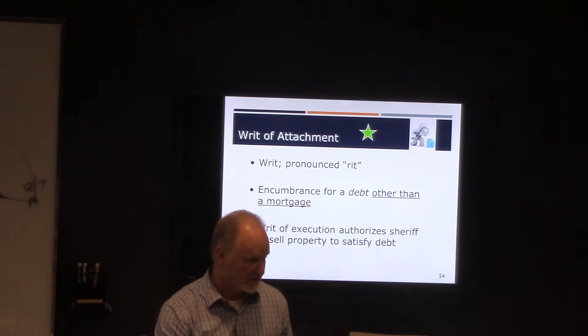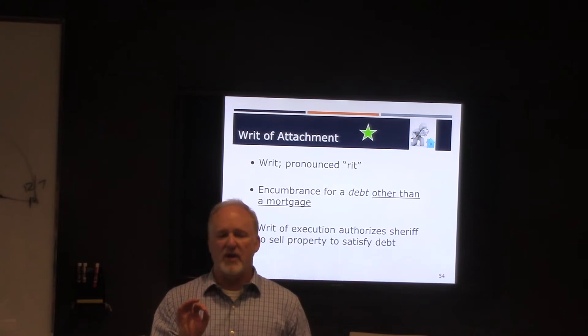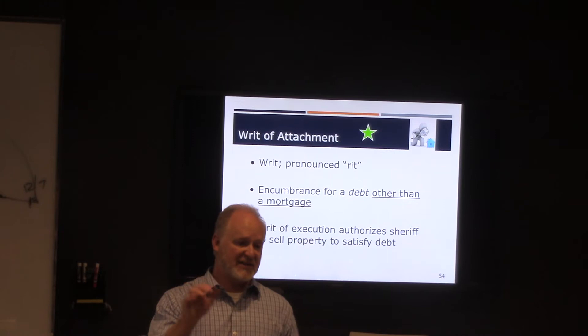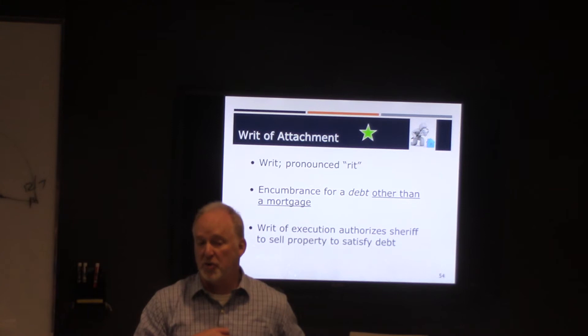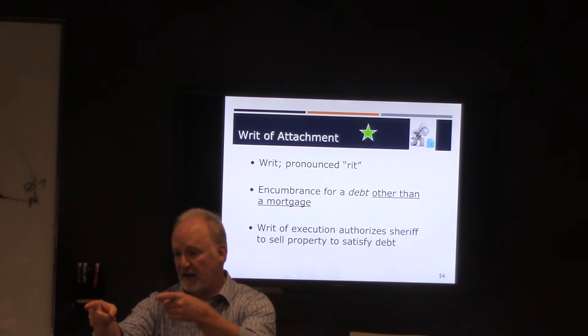Notice again, when did I file for a writ of attachment? Simultaneously with filing the suit. Okay. Have I won the suit yet? No. But what I'm doing is I'm putting the notice out that I plan to attach this property if, in fact, I win this lawsuit. Okay. If I ultimately win the lawsuit, then I can file what's known as a writ of execution. The writ of execution says, hey, sheriff, go out there and take her property, sell it at public auction, and give me the money because she owes me money.